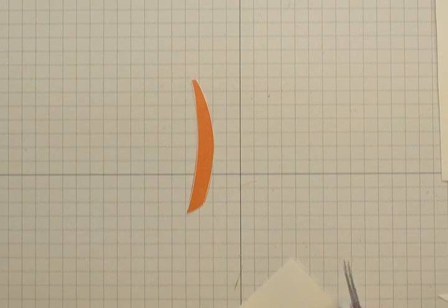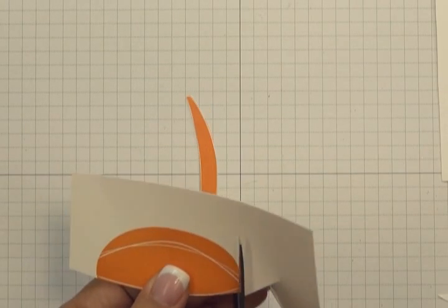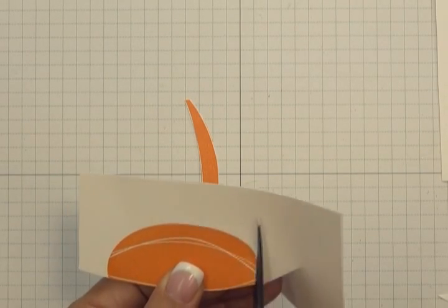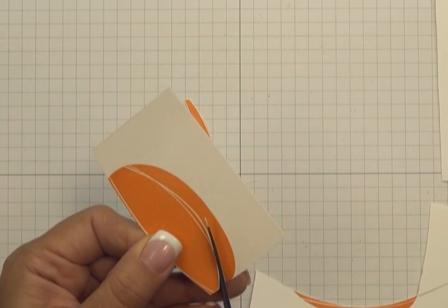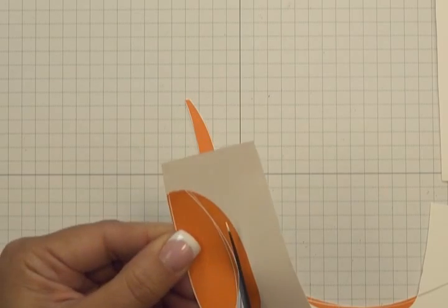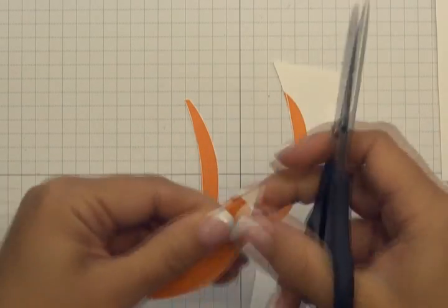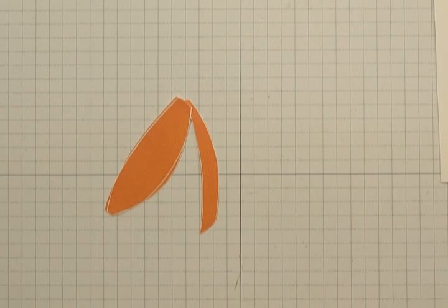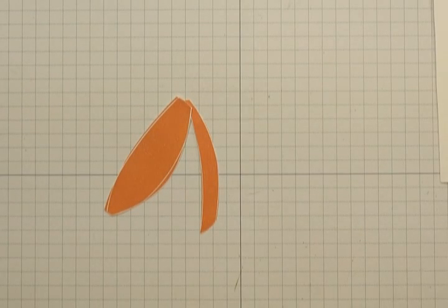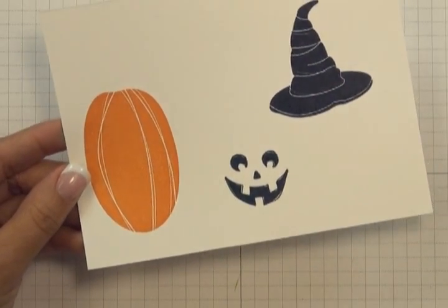And then I'm going to be cutting out this middle segment. So there you can see what that looks like. I'm going to be using those two pieces to build the dimension on the pumpkin. I'm just going to go ahead and cut these pieces out and I'll be right back.